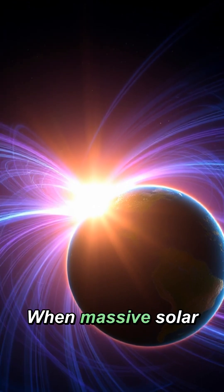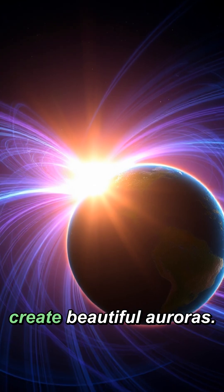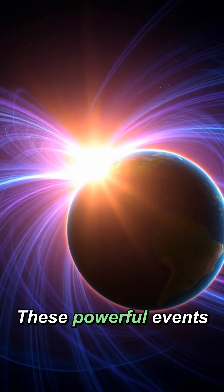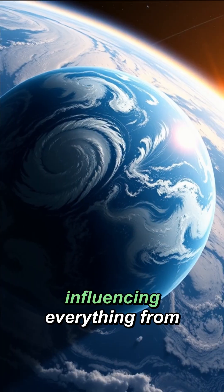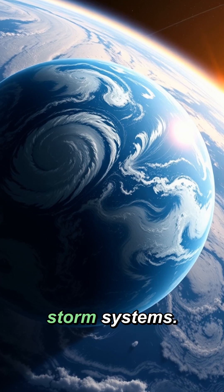When massive solar storms hurtle through space, they don't just create beautiful auroras. These powerful events can trigger atmospheric chain reactions, influencing everything from global temperatures to storm systems.